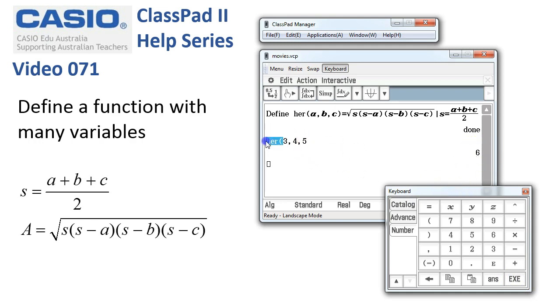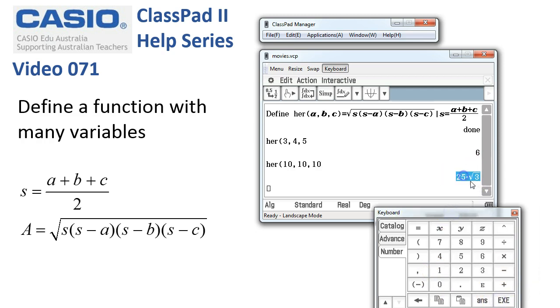So let's try it again. What about if we had an isosceles triangle maybe of side 10 centimeters—10 comma 10 comma 10. We tap execute and there's our exact answer 25 root 3, if we convert it into a decimal 43.03.